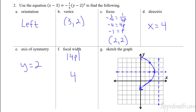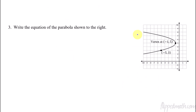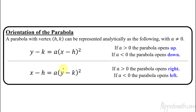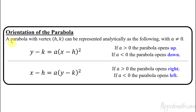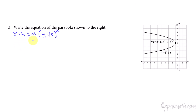Now let's move on to coming up with an equation if you only have a graph. We're trying to put it in one of the two standard forms. If it's opening to the left, we want y to be squared and we know a is negative. We know the vertex is at negative 1, 5, so we plug that in: x plus 1 equals A times y minus 5 quantity squared. I don't know what A is yet, but that's okay.